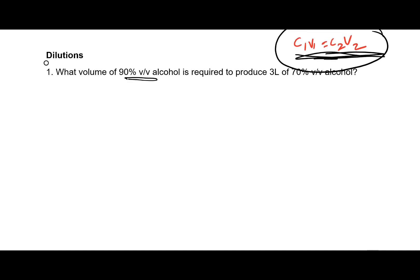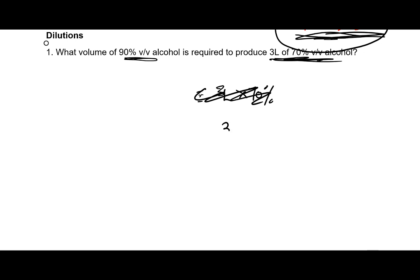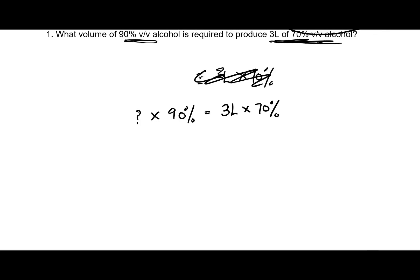Have a look at this one: what volume of 90% v/v alcohol is required to produce three liters of 70%? So I need to make three liters of 70% from 90%. I can simply apply C1V1 = C2V2: three times 70 divided by 90, which gives 2.33 liters.